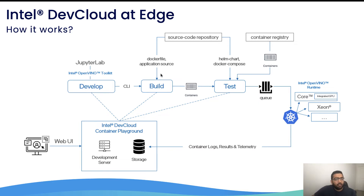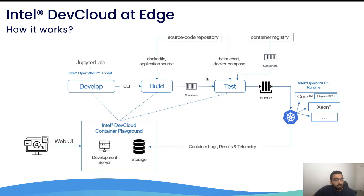The second workflow is when a user already has a Dockerfile or application source available — maybe on GitHub or another source code management system. We have a build option where the user can pull those Dockerfiles directly from GitHub, build a Docker image, and deploy it on Intel hardware. The third workflow is for when a developer already has their application available as a Helm Chart, Docker Compose, or in a Docker Hub, AWS, or GCP registry — they can just test it on different Intel hardware. The fourth workflow is the marketplace, where end-to-end solutions and use cases are available organized by vertical, and the user can run them on the Dev Cloud at Edge infrastructure.